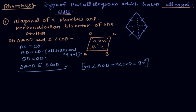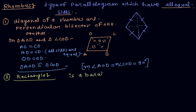So I have proved this property — diagonals of a rhombus are perpendicular bisectors of one another. Now the next type of parallelogram is rectangle.